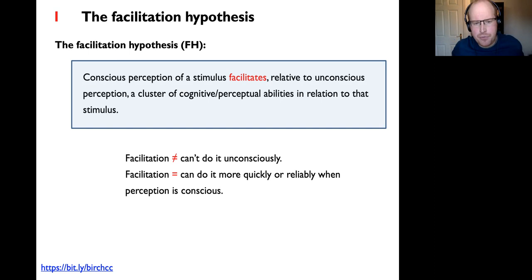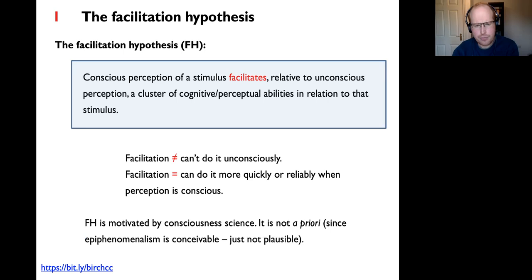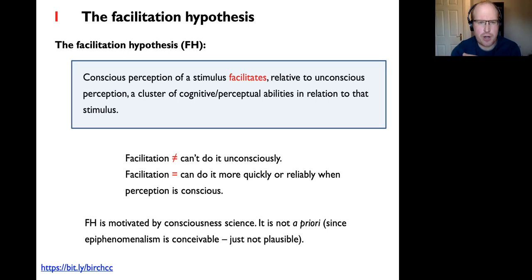The facilitation hypothesis is that conscious perception of a stimulus facilitates—relative to unconscious perception—a cluster of cognitive or perceptual abilities in relation to that stimulus. By 'facilitation' I don't mean there are things we can't do unconsciously; it's very hard to point to anything we're confident we can't do unconsciously. What I mean is that we can do these things more quickly or reliably when perception is conscious rather than unconscious. This hypothesis has the status of a guiding hypothesis, not something guaranteed a priori to be true—epiphenomenalism is conceivable but just not empirically plausible.